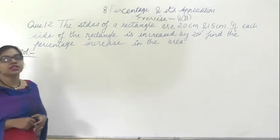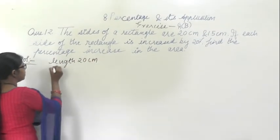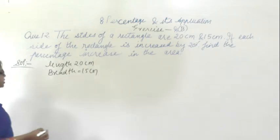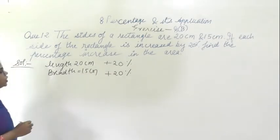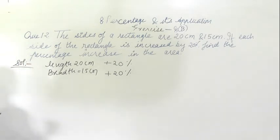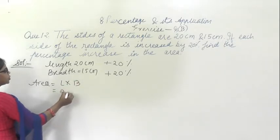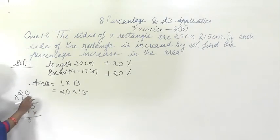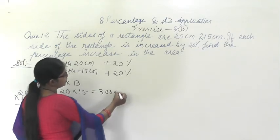This is question number 12. The sides of a rectangle are given: length is 20 cm and breadth is 15 cm. Each side is increased by 20%. We have to find the percentage increase in the area. First, the original area equals length into breadth, that is 20 into 15, which equals 300 cm squared.